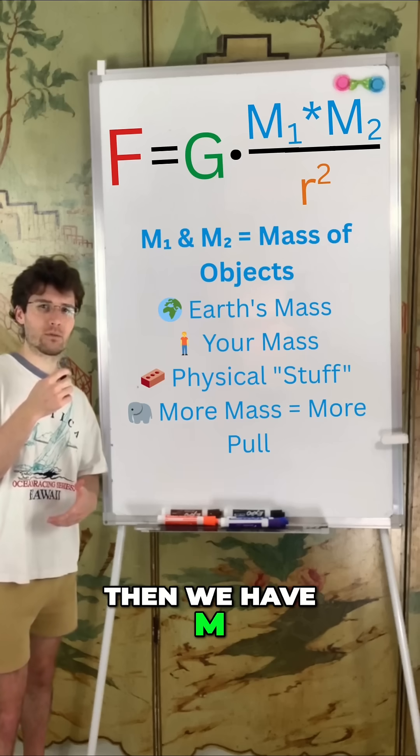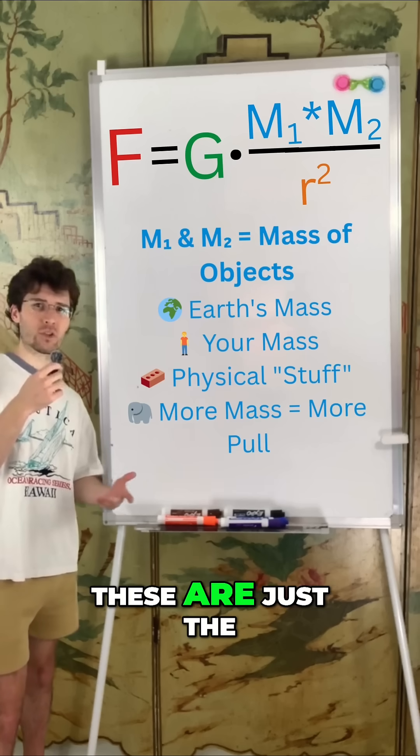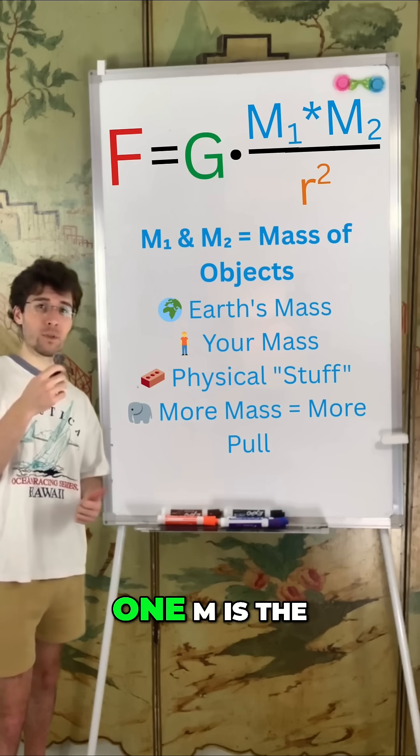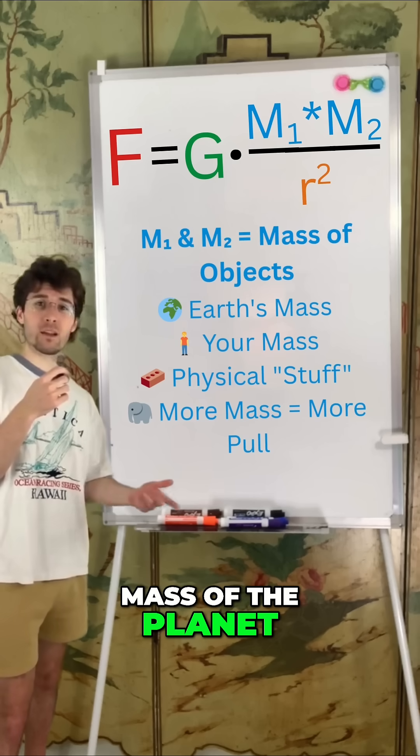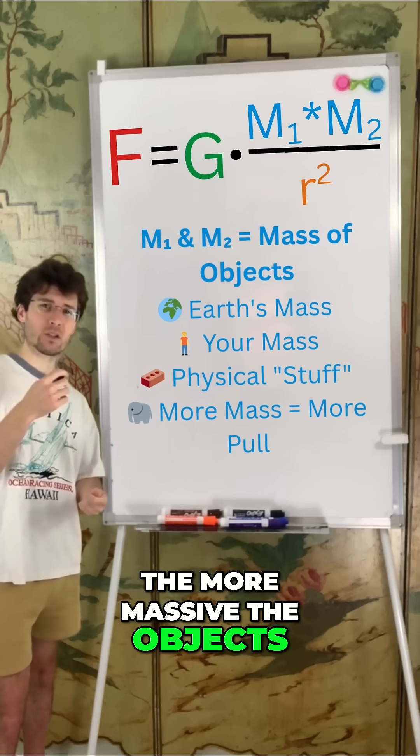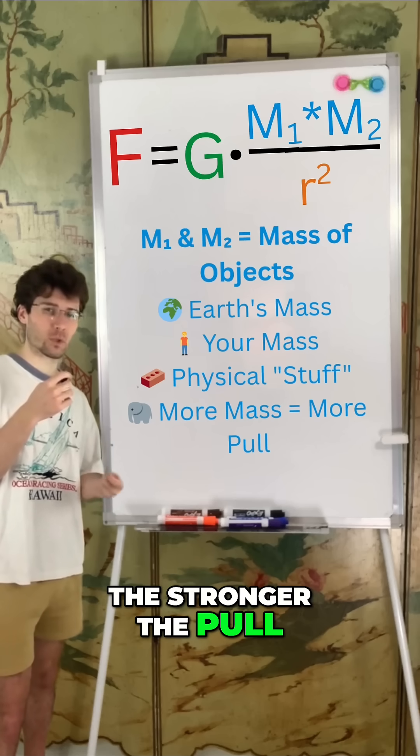Then we have M1 and M2. These are just the masses of two objects. So for you and the earth, one M is the mass of the planet and the other is your mass. The rule is simple: the more massive the objects, the stronger the pull between them.